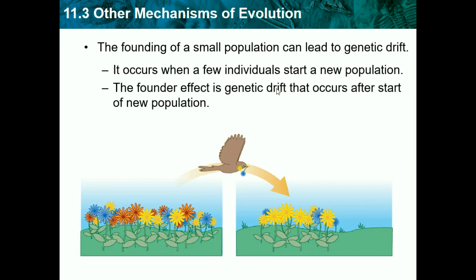The founder effect increases genetic drift. For example, a bird carrying seeds of a flower from a large population starts a new population. If it only takes two types of seeds when three existed — say blue, yellow, and orange flowers — then the new population only has yellow and blue, losing all the orange flower alleles and a large part of the original gene pool.